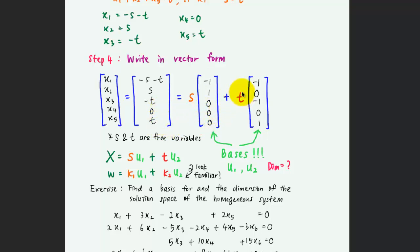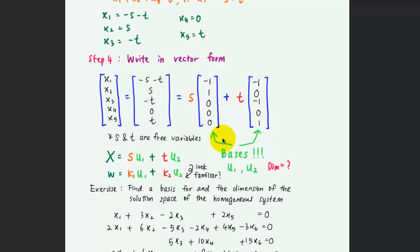On the other hand, factorizing out t gives another column vector with coefficients: negative 1 for x1, 0 for x2, negative 1 for x3, 0 for x4, and 1 for x5. So s and t are scalars whose values are decided based on your assumption, and the two column vectors are actually the bases for the system — u1 and u2.